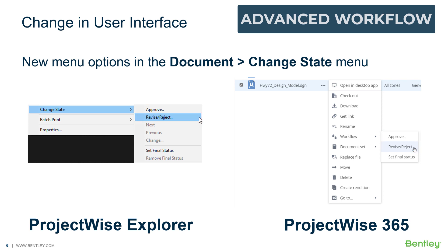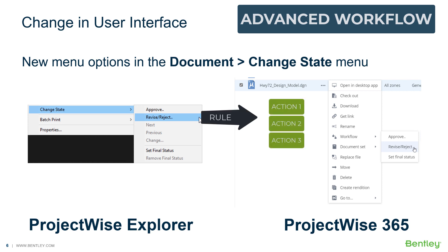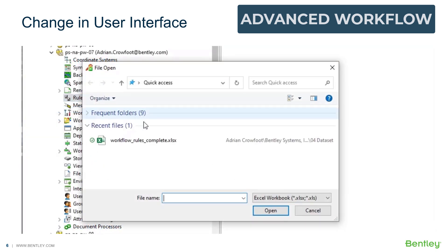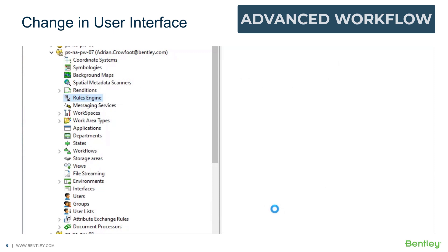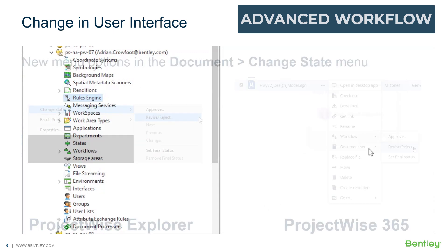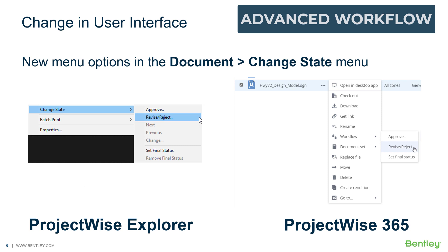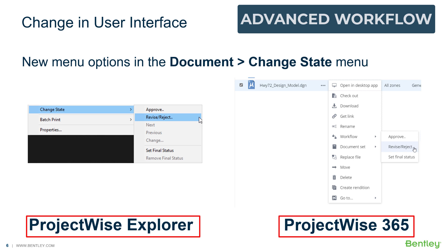The selected operation triggers a rule, which is a defined set of actions configured to run in a specific sequential order. Workflow rules are imported through the rules engine node in ProjectWise Administrator. Any ProjectWise user will be able to use the rules in ProjectWise Explorer or ProjectWise 365 projects, assuming they also have access to the workflows that are using the rules.